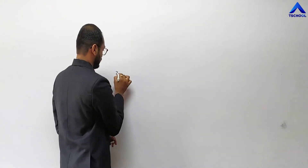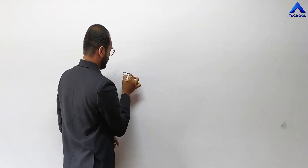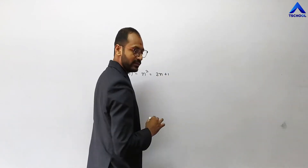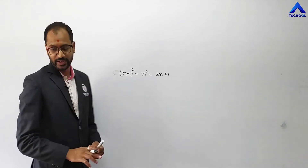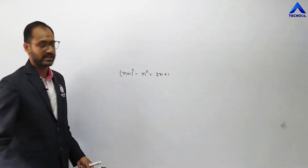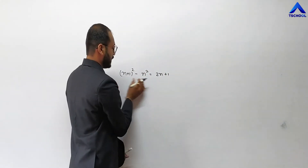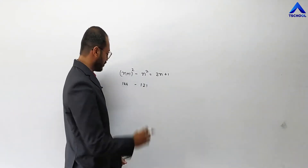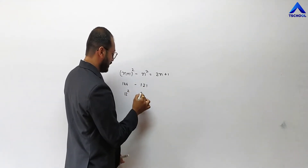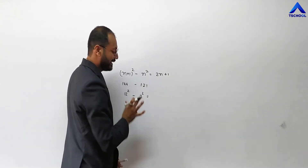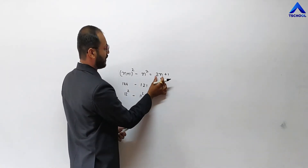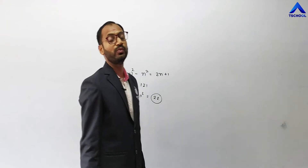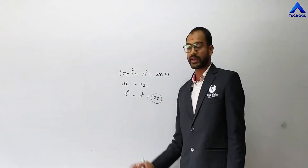We got the equation: (n+1)² minus n² equals 2n plus 1. This is the basic formula to find how many natural numbers exist between two perfect squares. For example, how many numbers are between 121 and 144? Since 144 is the square of 12 and 121 is the square of 11, the smaller number is our n, so twice of 11 is 22. There are 22 natural numbers between these two perfect squares.